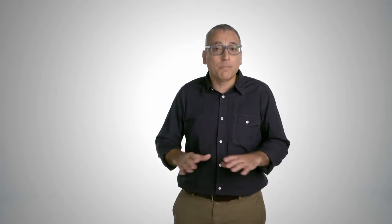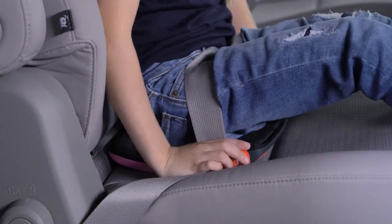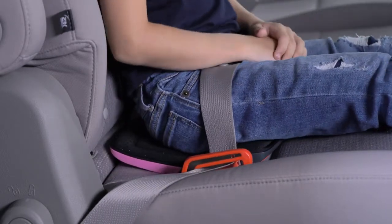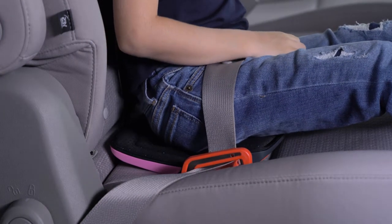To avoid potential abdominal injury from submarining under the vehicle lap belt, the child must sit with their bottom and back in contact with the vehicle seat back cushion and with the vehicle seat belt snugly adjusted.